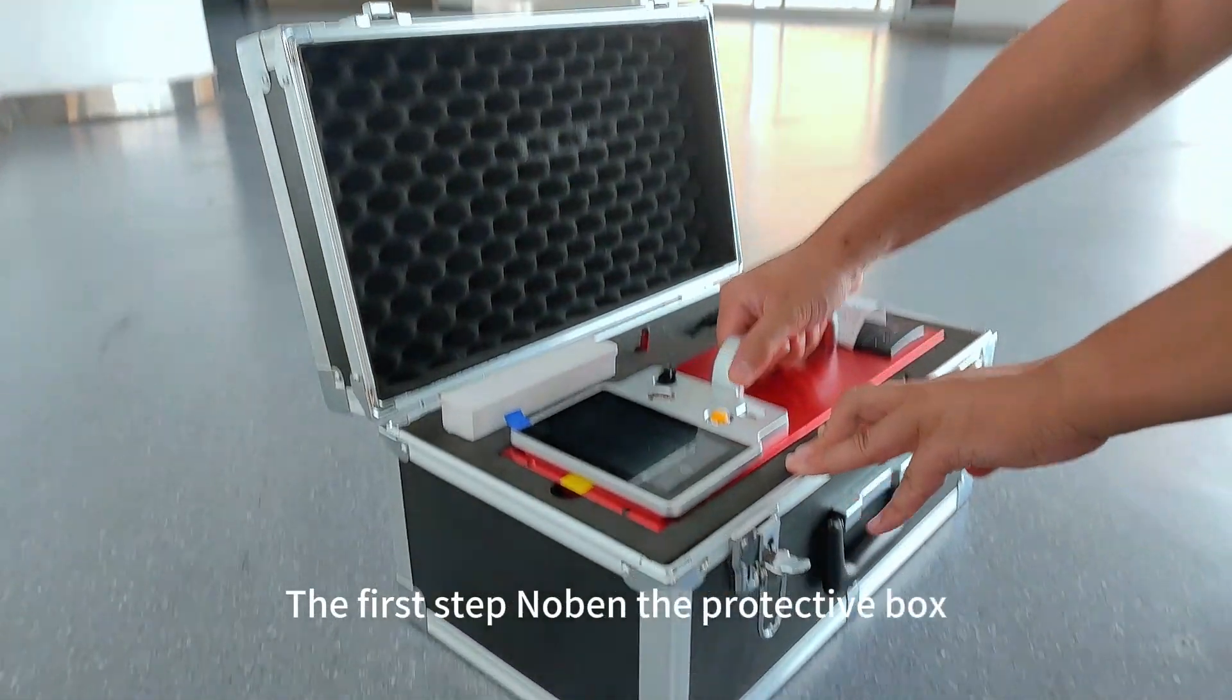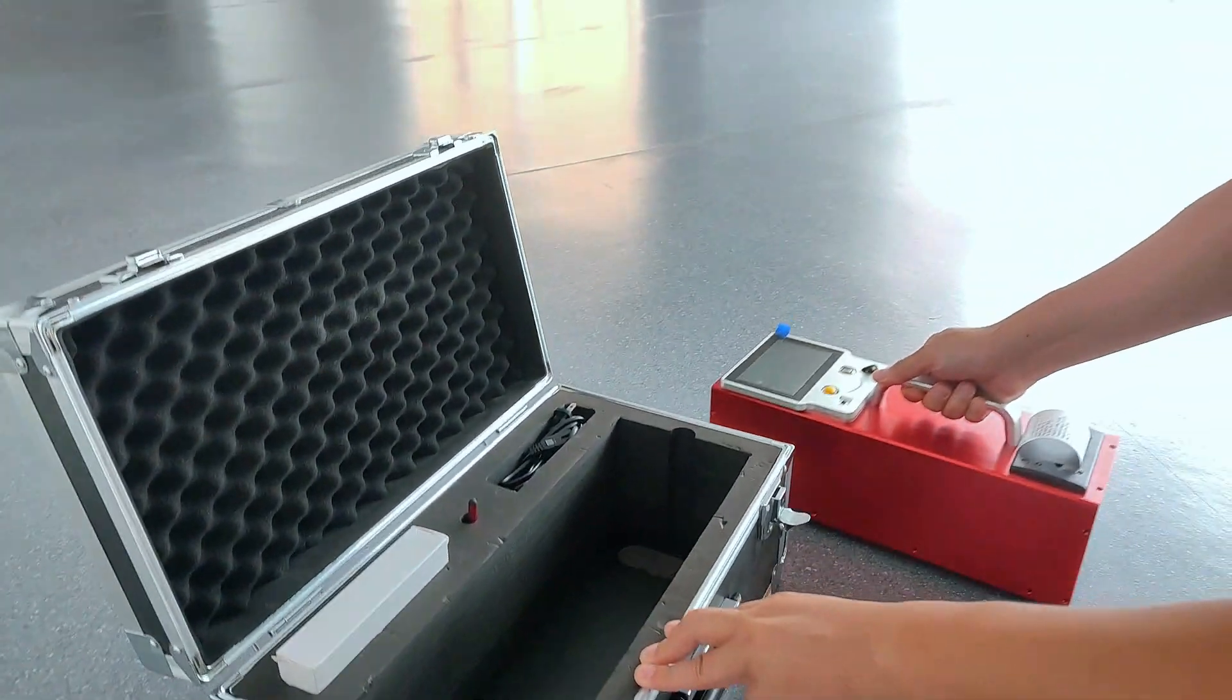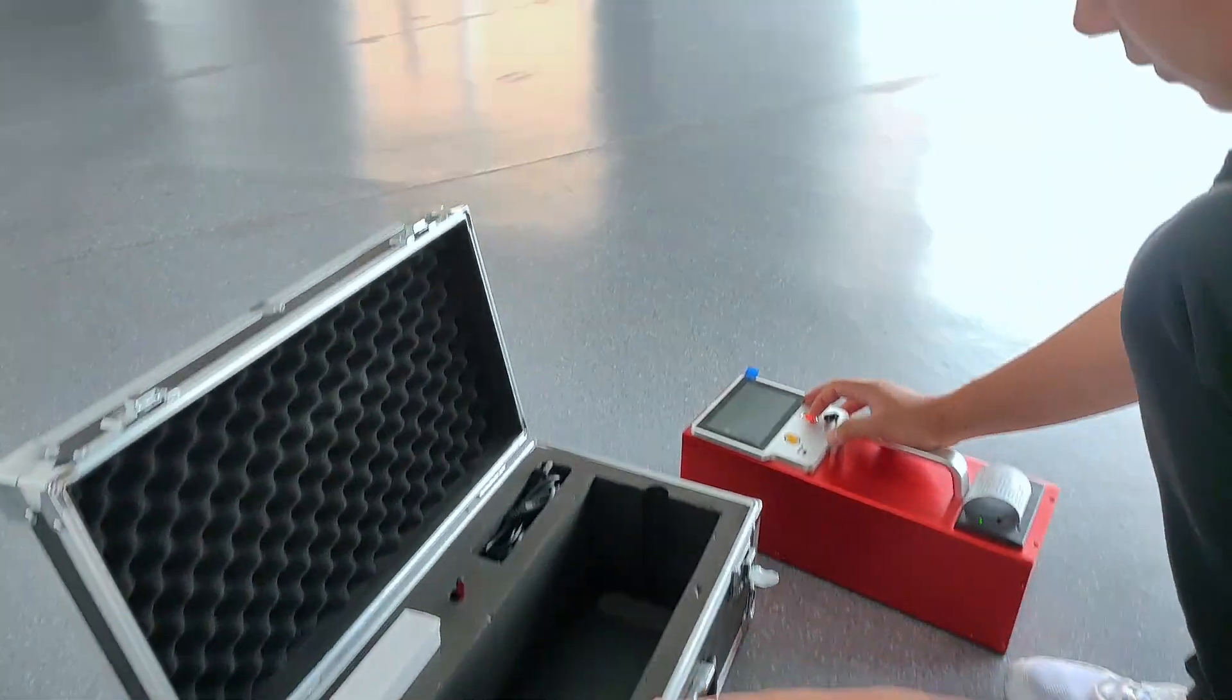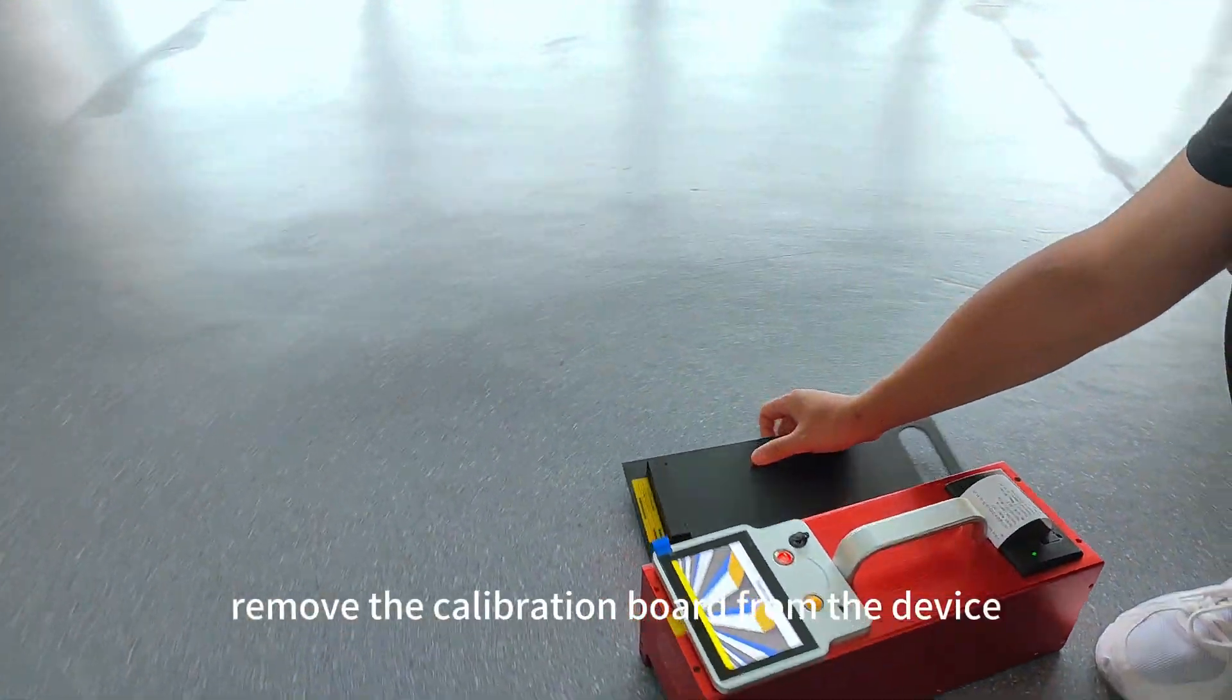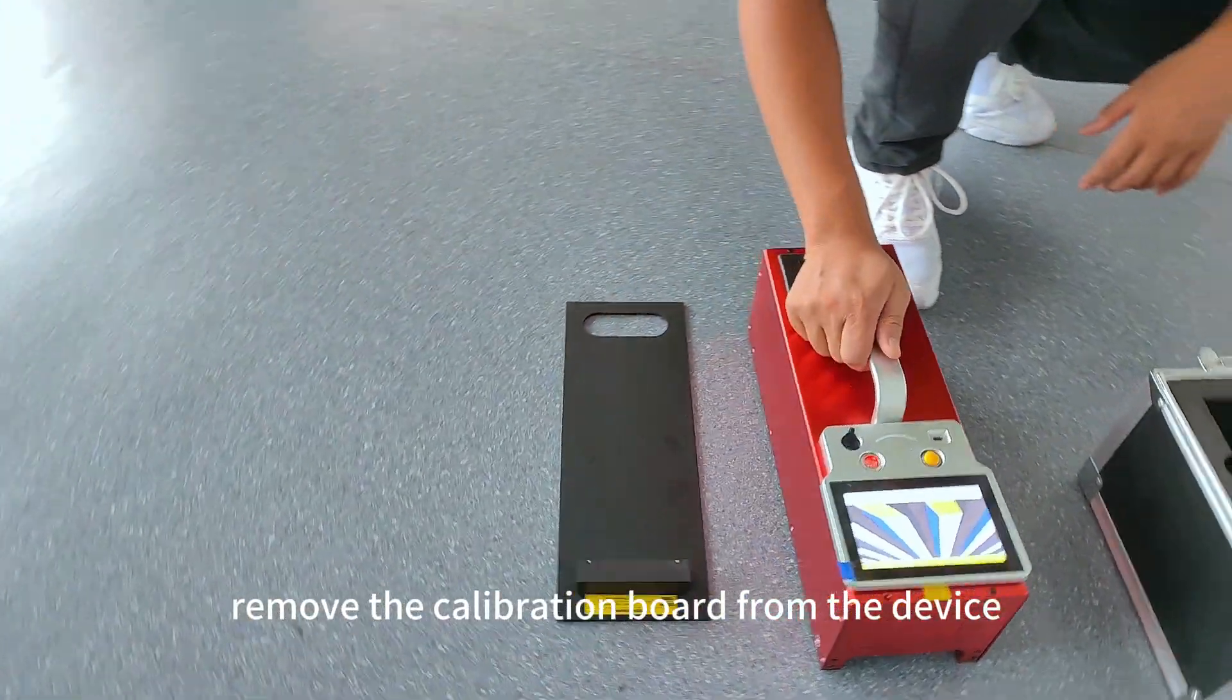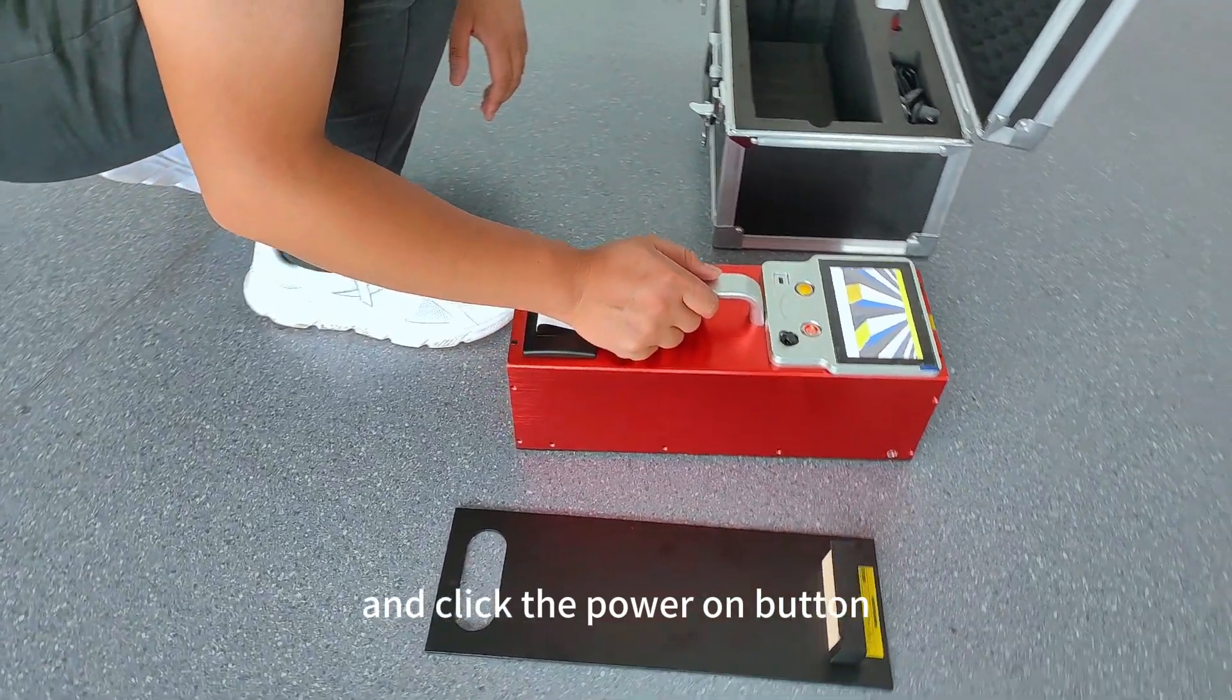The first step, open the protective box. Second step, remove the calibration board from the device body and bottom, and click the power on button.